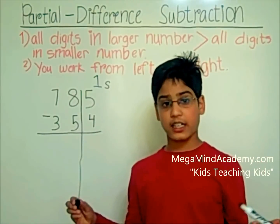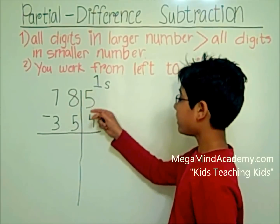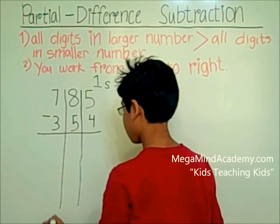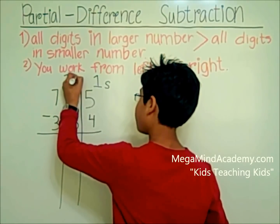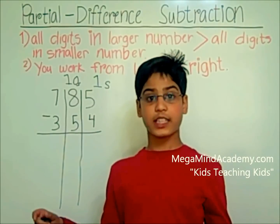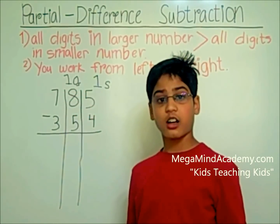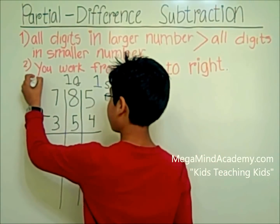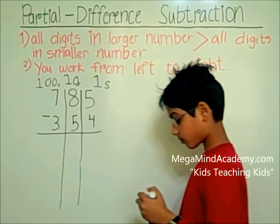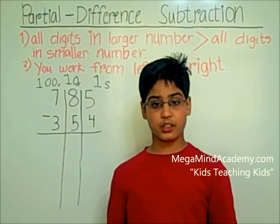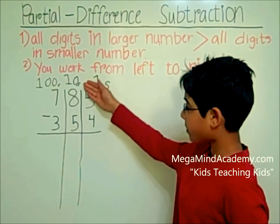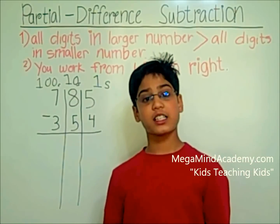Now let's go to the digits on the left side of the ones place. They are 8 and 5, and they are in the tens place. Next, the digits to the left — 7 and 3 — are in the hundreds place. So to summarize: 5 and 4 are in the ones place, 8 and 5 are in the tens place, and 7 and 3 are in the hundreds place.